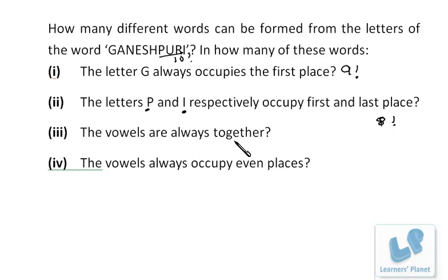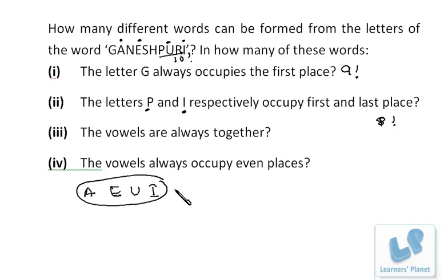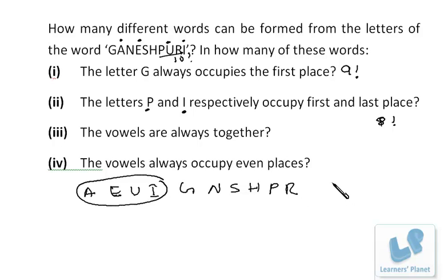Now there is a twist: the vowels are together. How many vowels are there? A, E, U, and I — four vowels. I take them as one single letter, and the remaining consonants are G, N, S, H, P, R — that gives us one group plus six consonants, so seven letters total. These seven letters can be arranged in 7! ways. The four vowels A, E, U, I can be mutually arranged among themselves in 4! ways. So the answer is 7! × 4!.